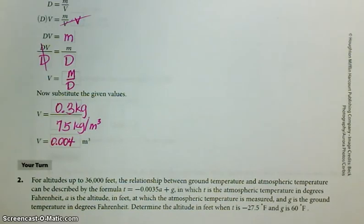All right. For the next one, it says for altitudes up to 36,000 feet. It says your turn, but we'll do it together. The relationship between ground temperature and atmospheric temperature can be described by the formula T equals negative 0.0035A plus G, in which T is the atmospheric temperature in degrees Fahrenheit, A is the altitude in feet at which the atmospheric temperature is measured, and G is the ground temperature in degrees Fahrenheit. So determine the altitude in feet when T is negative 27.5 degrees Fahrenheit and G is 60 degrees Fahrenheit.